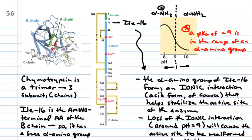And then once you get past 9, you go to the base form of the alpha amino group, and you don't get an ionic interaction. And this alpha amino group, being in the acid form and protonated, forms a very important ionic interaction that stabilizes the active site of the enzyme.